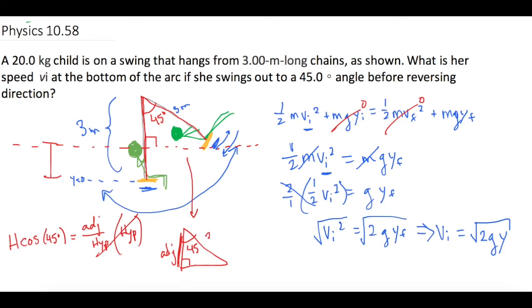The hypotenuse is 3, because that's the length of the chain, and that didn't change. So we have 3 cosine 45.